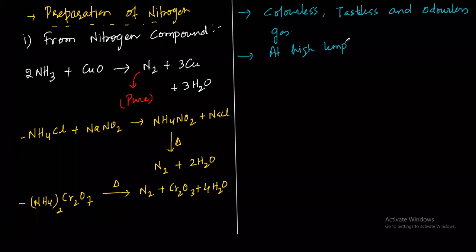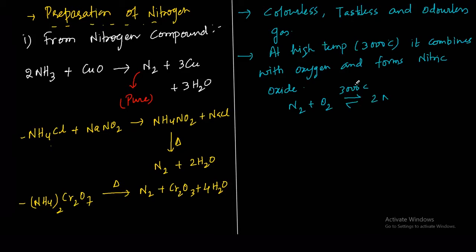At very high temperature, around 3000 degrees Celsius, nitrogen combines with oxygen and forms nitric oxide. The reaction is N2 plus O2 at around 3000°C gives 2NO. Nitrogen and oxygen are non-reacting at room temperature, so this reaction requires very high temperature.